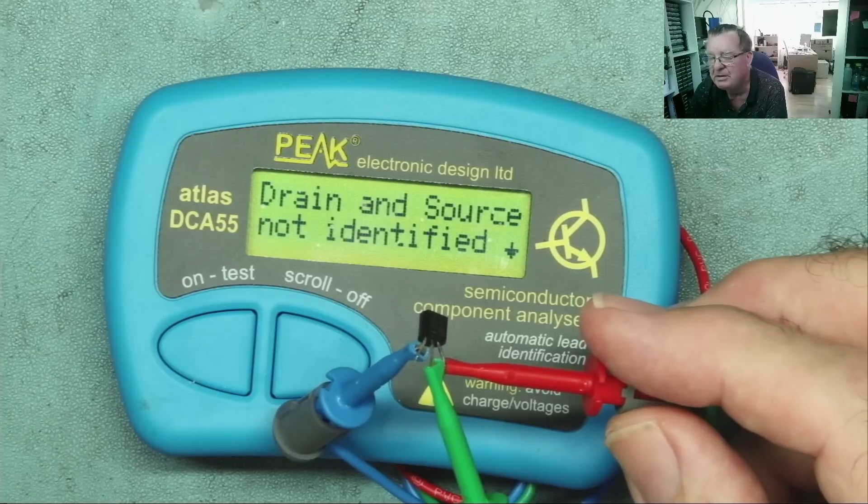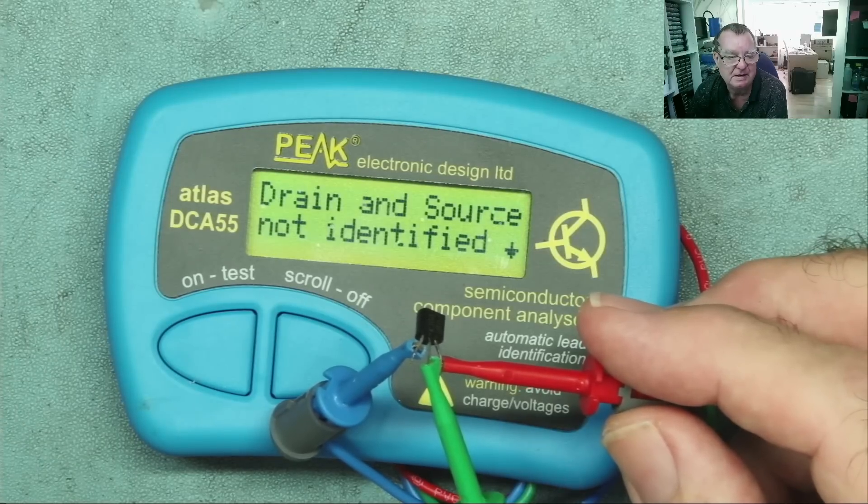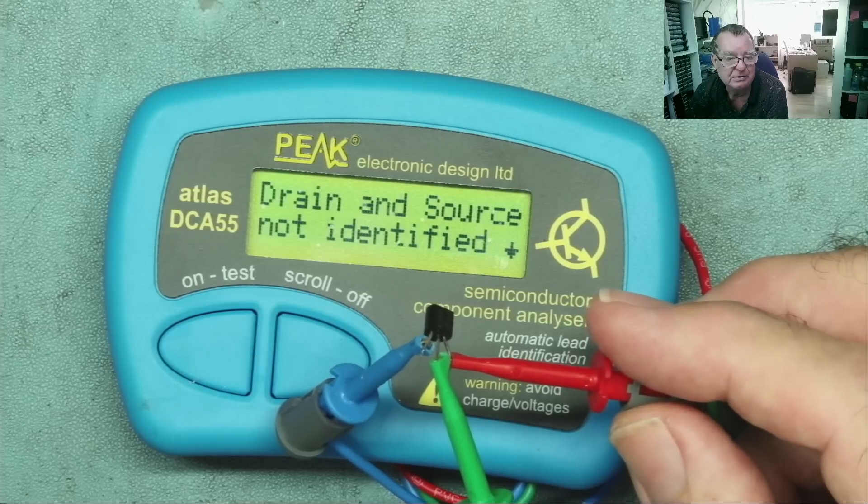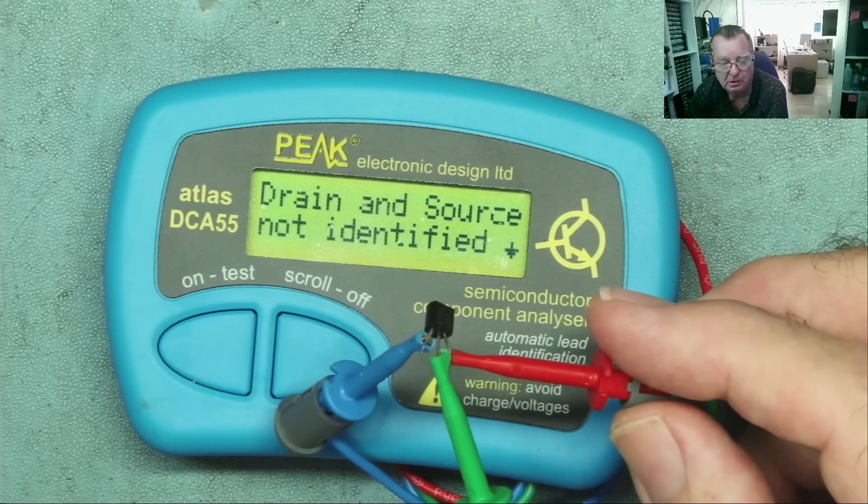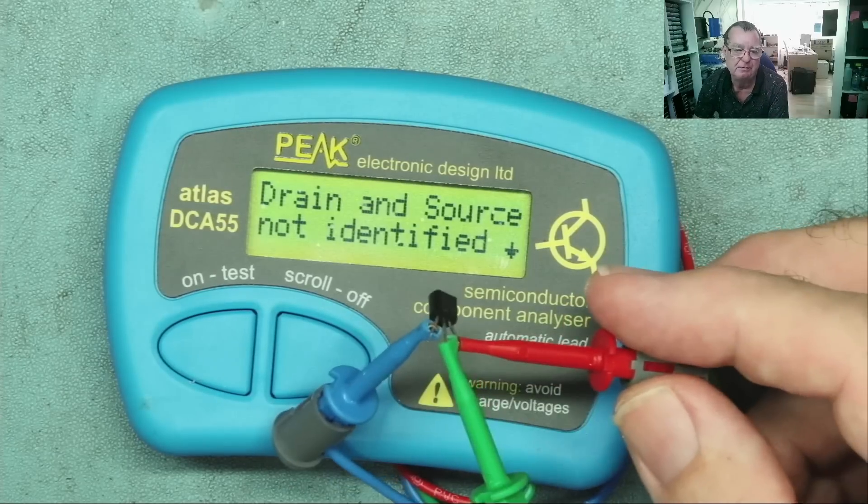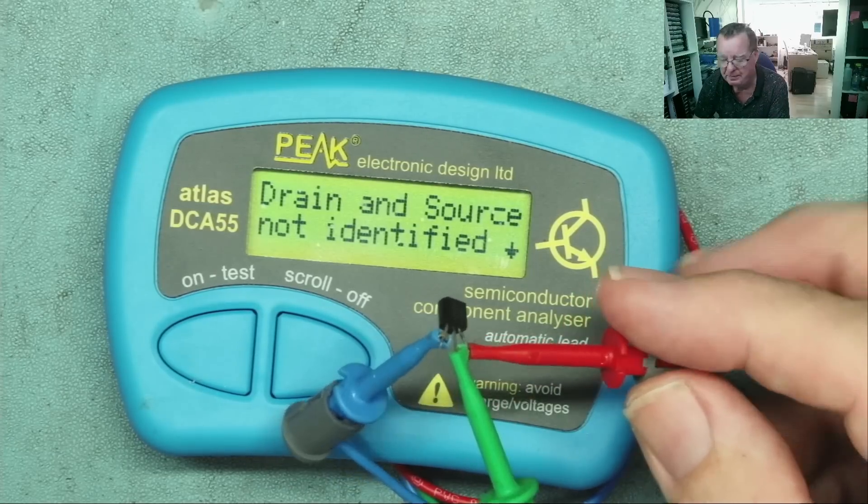Now, does that mean there's something wrong with my component analyzer? No, there isn't. Does it mean that this particular component analyzer can't test JFETs properly? Yes, it can. So why does it say the drain and source are not identified? Well, this brings us to a very special property of JFETs.